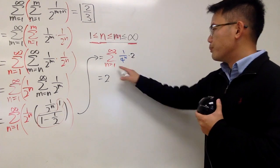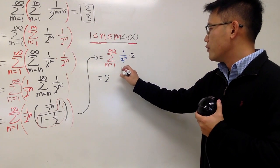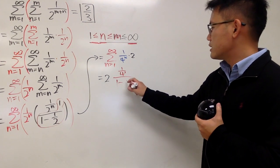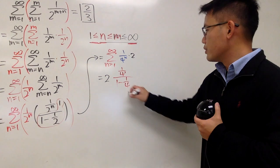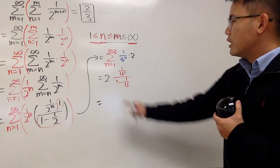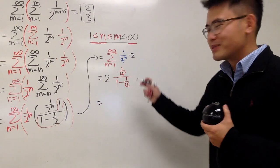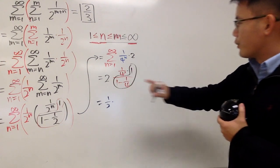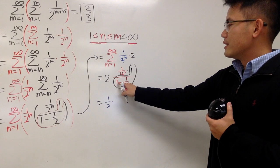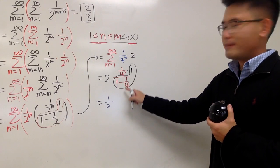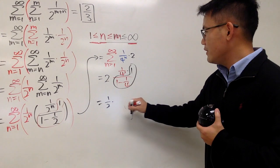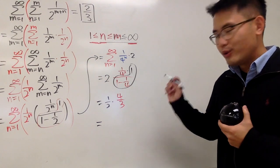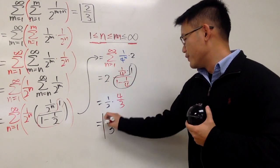For this geometric series, the first term is 1 over 4 to the first power, divided by 1 minus 1/4 for the common ratio. So we get 2 times (1/4) divided by (3/4). That's 2 times 1/4, which is 1/2, then divided by 3/4, so multiply by 4/3, giving 4 over 3. Altogether, you end up with 2/3 for the answer.